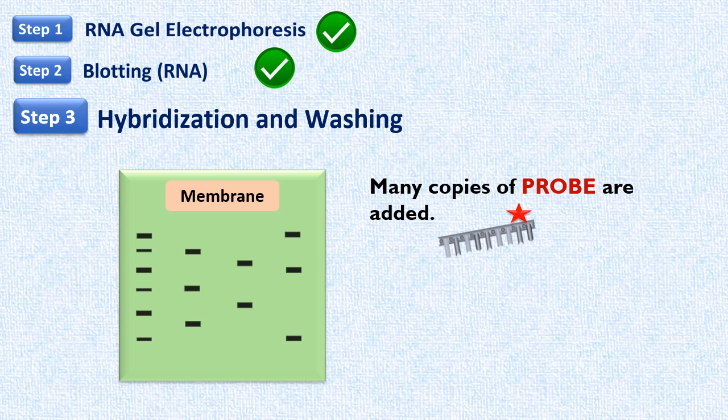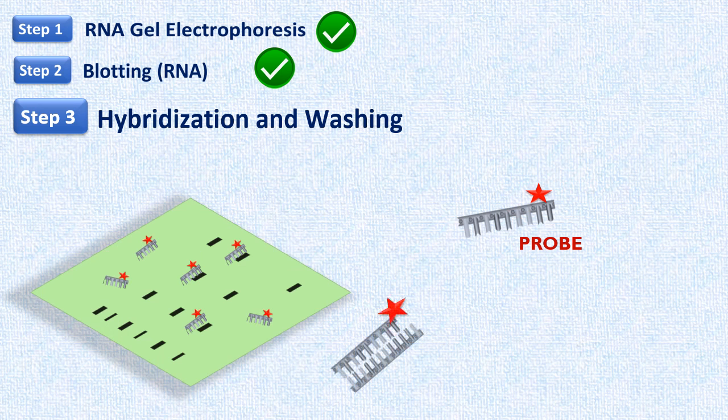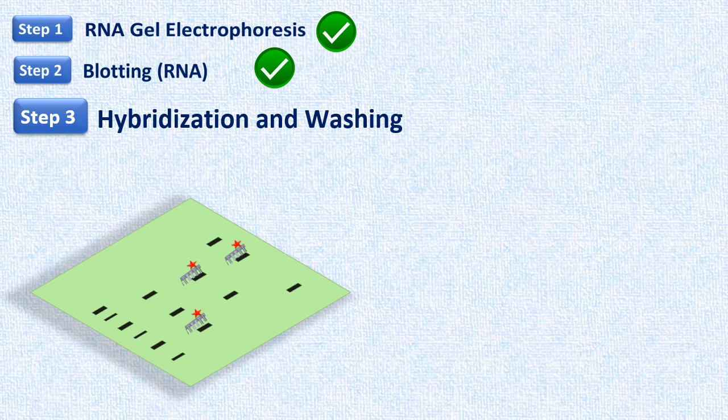The probe can be a complementary labeled RNA sequence or labeled complementary DNA sequence. When nylon membrane is incubated with these probe molecules, probes will bind specifically to their complementary target RNA molecules. Unbound probes are removed by washing.